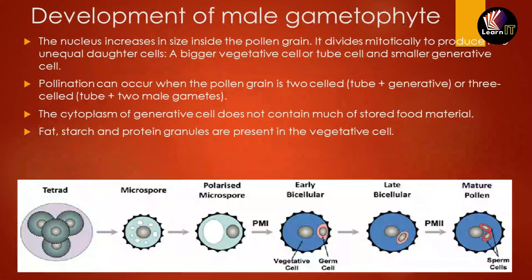Now let us discuss how pollen grains develop into male gametophytes. After the tetrad is formed, the nucleus in each individual microspore increases in size and then divides mitotically to produce two unequal cells: a larger one called the vegetative cell (also known as the tube cell) and a smaller one called the generative cell (also known as the germ cell).